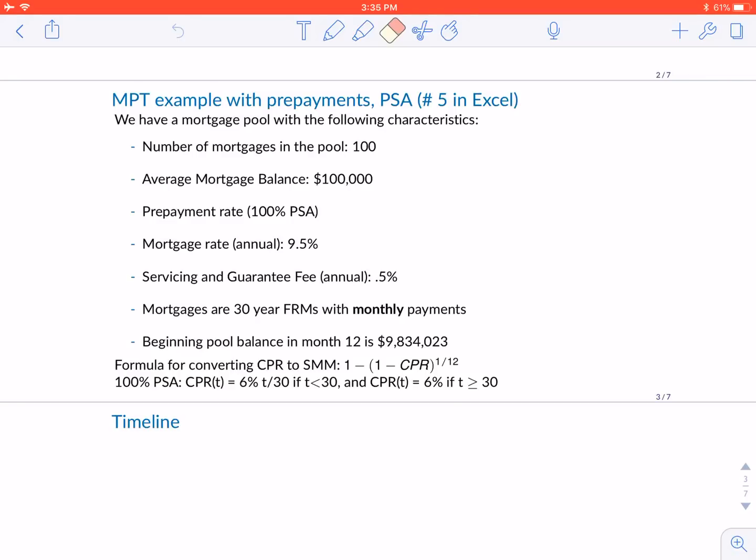The premise is the following: there's a mortgage pass-through security consisting of 100 mortgages originally issued at $100,000 each. There is 100% PSA prepayment rate, each mortgage is issued at 9.5% annual mortgage rate, there is a 0.5% servicing fee that's also annual, all mortgages are 30-year fixed rate mortgages with monthly payments, and the beginning pool balance in month 12 is $9,834,023. In addition, I will give you the formula for converting the conditional prepayment rate to single month mortality rate and the CPR formula from PSA.